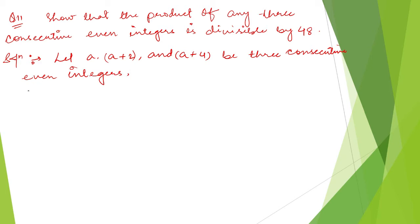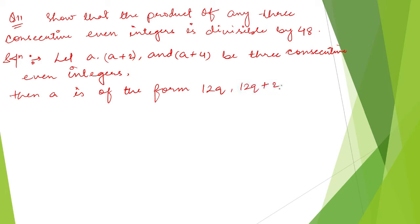Now, a is of the form: 12q, 12q plus 2, 12q plus 4, 12q plus 6, 12q plus 8, or 12q plus 10, since it is even integers. That's all the cases up to 10.